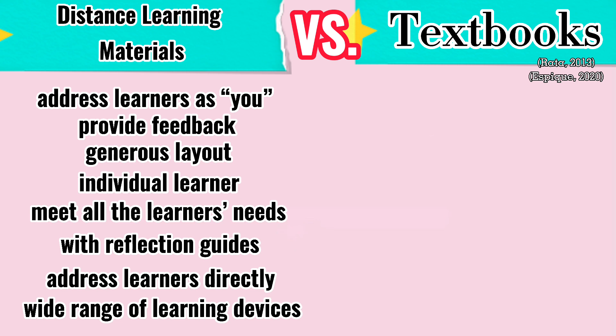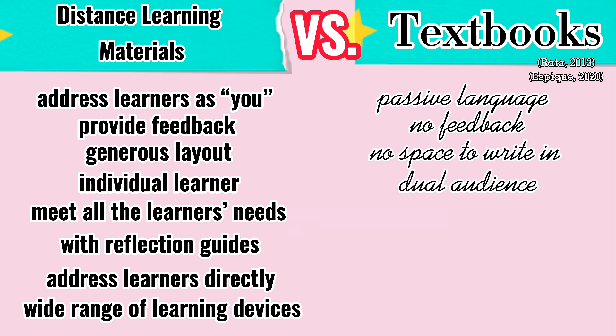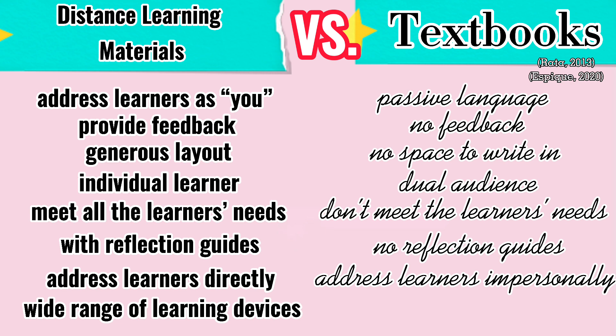On the other hand, textbooks use passive language, do not provide feedback, there is no space for learners to write in, serve a dual audience — the learner and the teacher — do not attempt to meet all the needs of the learner because the learner has a teacher who will be able to amplify the printed text, do not provide reflection guides, address the learners impersonally, and include a narrow range of learning devices.